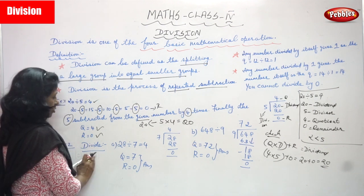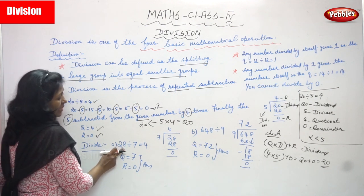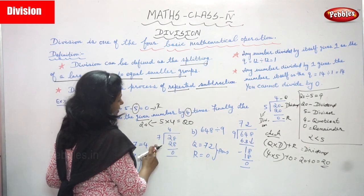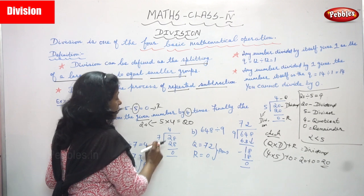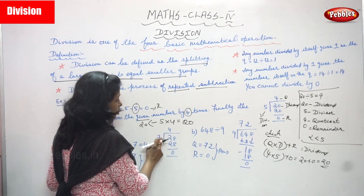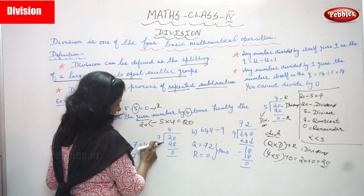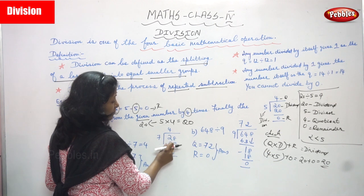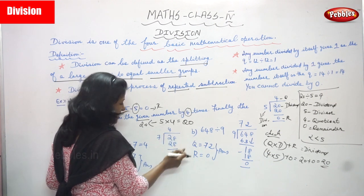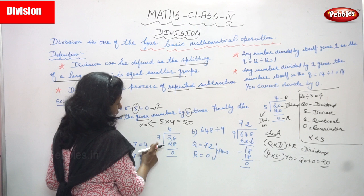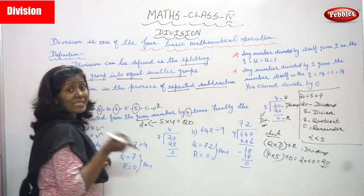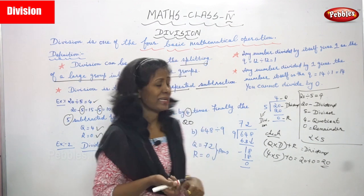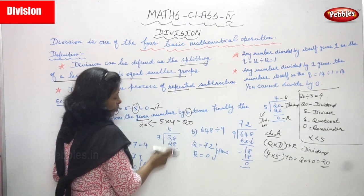Now moving on to the next example: 28 is divided by 7, and the answer is 4. So 28 is the dividend and 7 is the divisor. First compare 2 with 7 — 2 is less than 7, so take the next digit to get 28. From the 7th table: 7 ones are 7, 7 twos are 14, 7 threes are 21, 7 fours are 28. So quotient is 4 and remainder is 0.